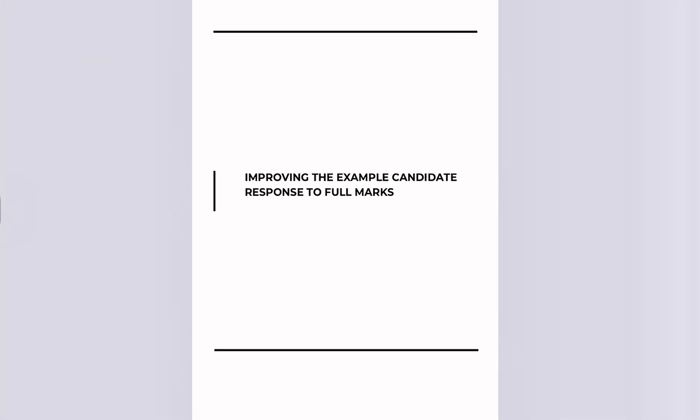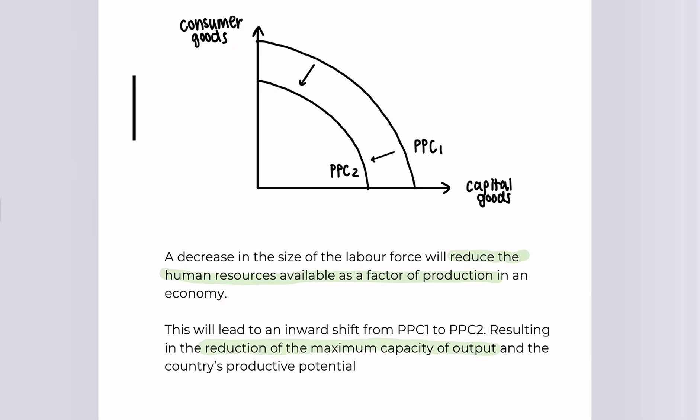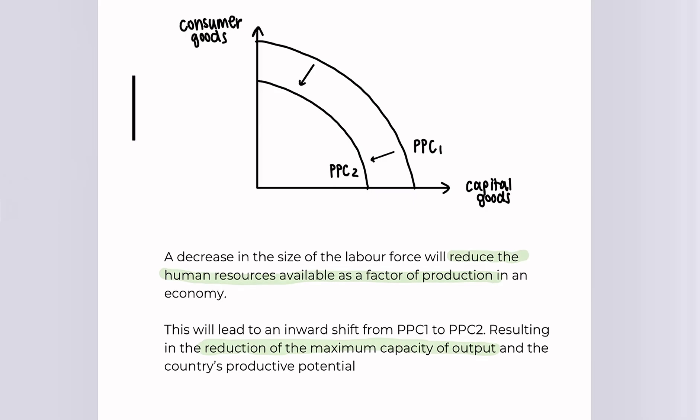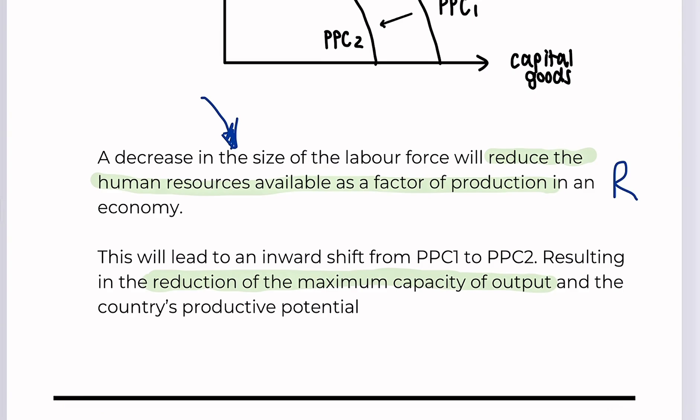So let's improve this example candidate response. It's essentially the same answer, however, I've also included a reason. So it sounds like this. A decrease in the size of labour force, remember, I've copied this from the question, will reduce the human resources available as a factor of production in an economy. This is my reason. This will lead to an inward shift from PPC1 to PPC2, resulting in the reduction of the maximum capacity of output. This is the effect of a reduction of human resources available as a factor of production. So that will be the last and final mark.